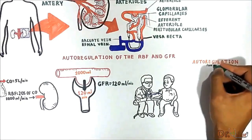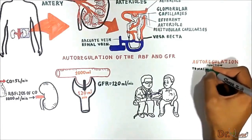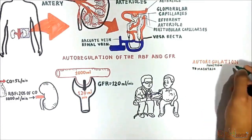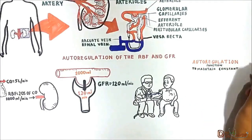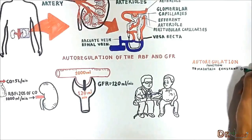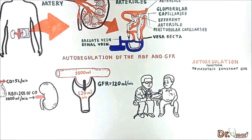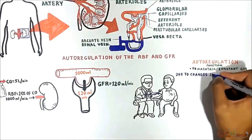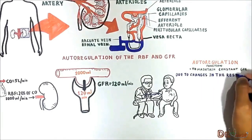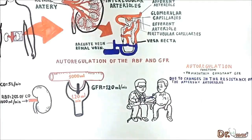The major function of autoregulation in the kidneys is to maintain a relatively constant GFR and to allow very precise control of renal excretion of water and solutes. Autoregulation in the kidneys is primarily due to changes in resistance of the afferent arterioles.